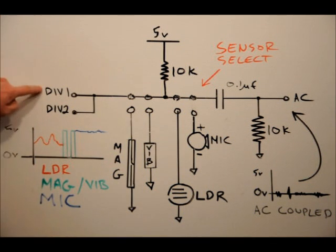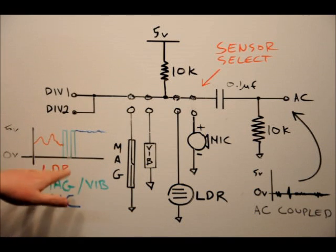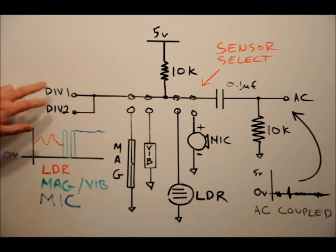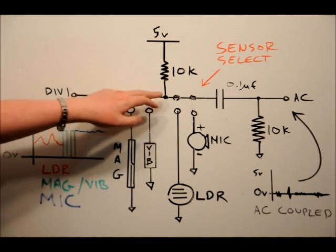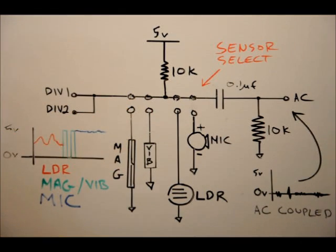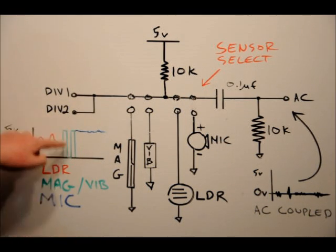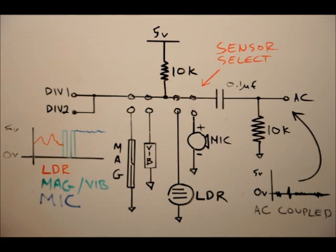Each sensor will have a different voltage or waveform depending on what state the sensor is in. The LDR, because it has a voltage divider, depending on how much light is hitting the sensor, we will see a different voltage on the div lines between 1 and 5 volts. The magnetic read switch and vibration sensor will either be 5 volts or 0 volts depending on the state of the sensor.